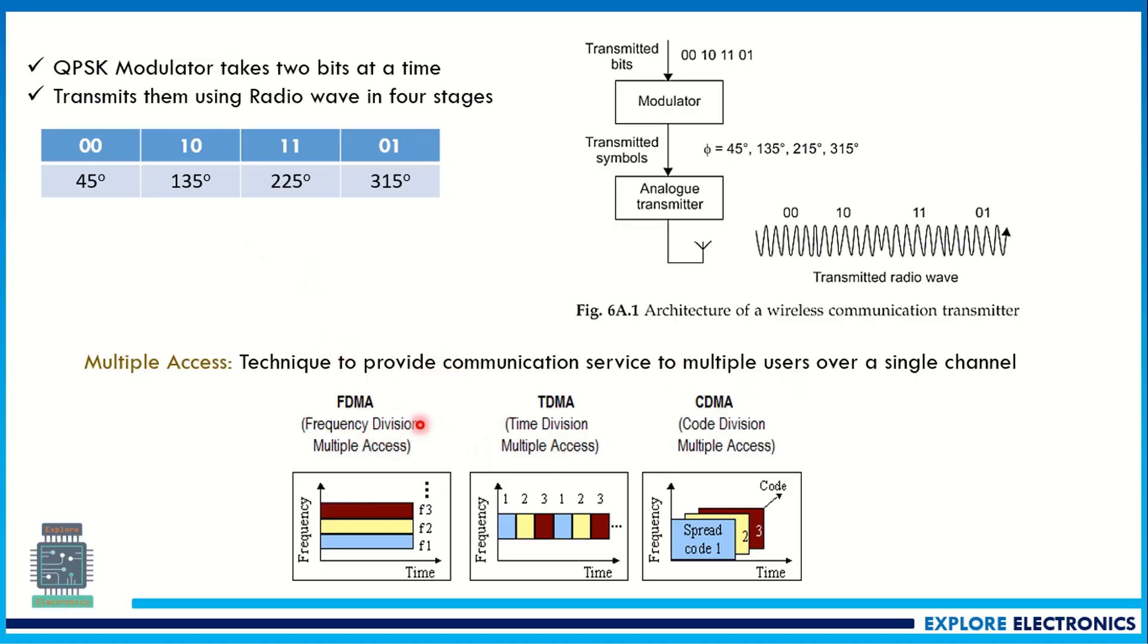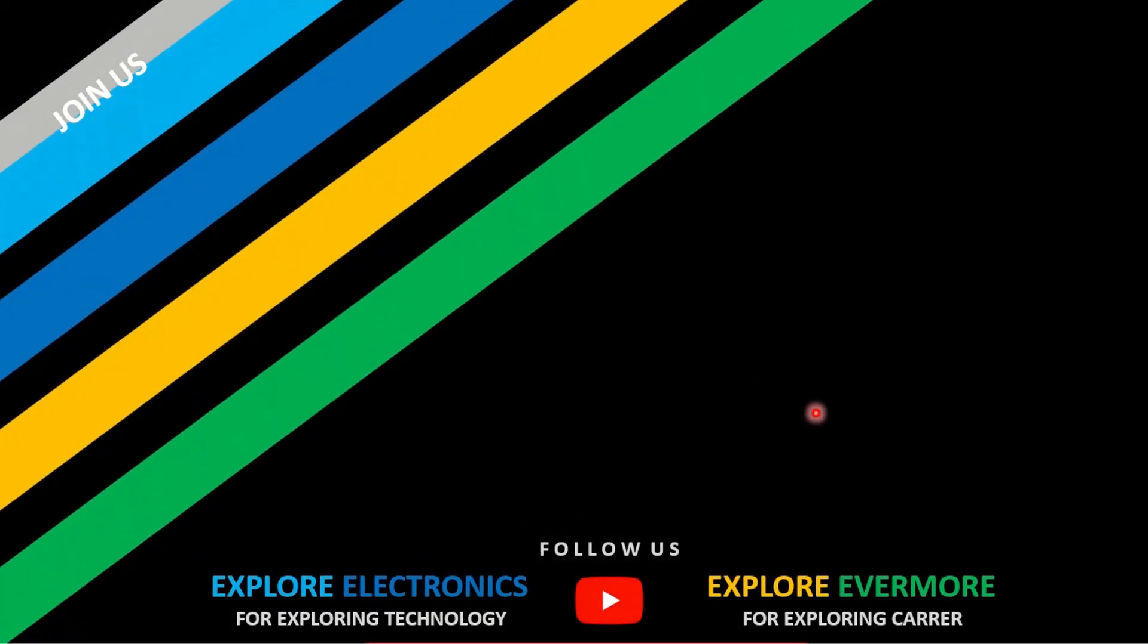Multiple access techniques are three: FDMA frequency division multiple access, time division multiple access TDMA, and CDMA code division multiple access. This much we need to write for this particular question. So this is about module 5 and other module questions I have already discussed.